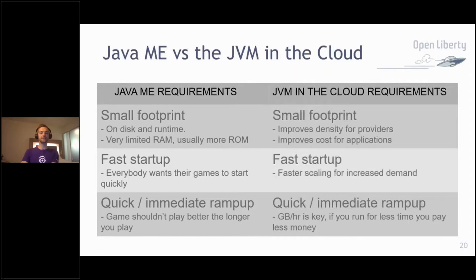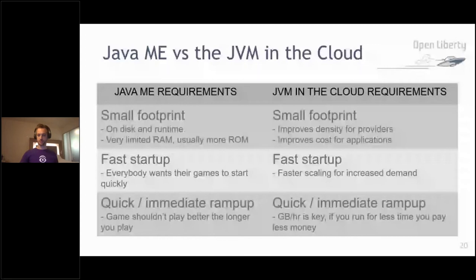The requirements for Java ME on those old phones compared to JVMs in the cloud are pretty similar. Small footprint — we want to run as small as possible to save money and energy. Fast startup — the time it takes your application to start is essentially wasted resources. That one, five, ten, or twenty seconds is completely wasted. And quick immediate ramp-up — not only do we want it to start fast, but we want the JVM to have the throughput it's designed for from the get-go.